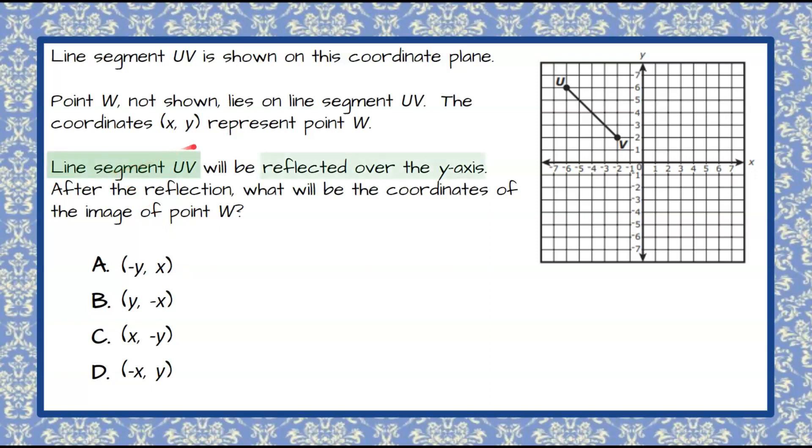So we have line segment UV that we're reflecting over the y-axis. So here is our y-axis, and we're reflecting it over so that we can determine the image of point W which is on this line segment.